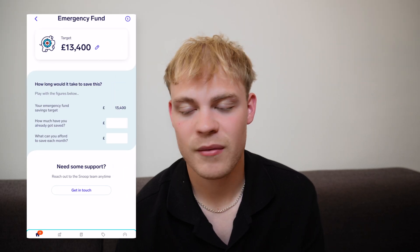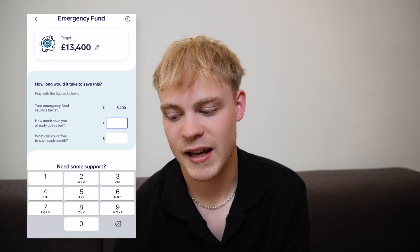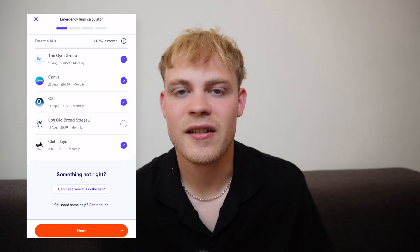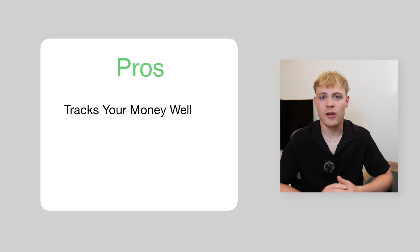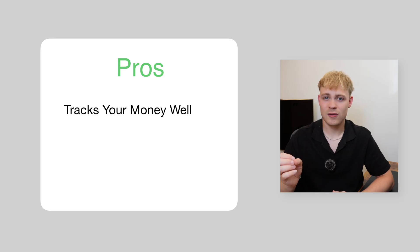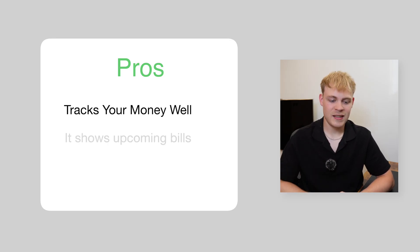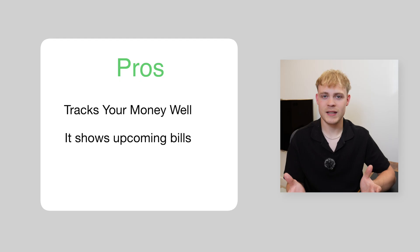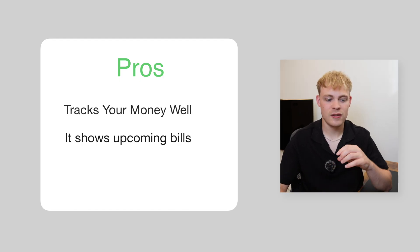You can create an emergency fund — I created one for six months and it gave me a target of £13,400. You can use different expenses and put them into this emergency fund, which is quite a nice feature. Overall it's so easy to use compared to others. The pros are pretty obvious: it tracks your money really well with nice charts, you can see exactly how much you spent this month compared to last month in categories, and it shows upcoming bills — brilliant because I have lots of direct debits but no idea when they're going out.